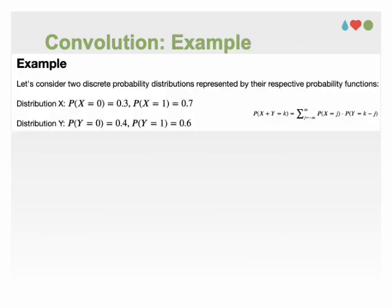Let's consider the example of estimating the convolution for different cases based on the given probability distribution. In this example, we have two discrete points, 0 and 1, for each random variable. In this example, we have four cases.